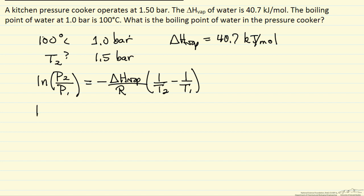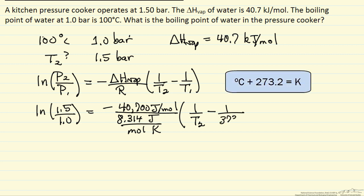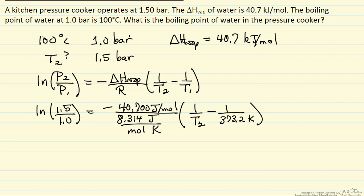We can substitute in 1.5 bar for P2 and 1 bar for P1. We want to be careful with units, so I am going to write the heat of vaporization in joules per mole, and then use the gas constant 8.314 joules per mole kelvin. Temperature T2 we do not know — that is what we are solving for. Temperature T1 is 100 degrees C, which in absolute temperature is 373.2 kelvin. So our only unknown is T2, and we can rearrange and solve this equation for T2.